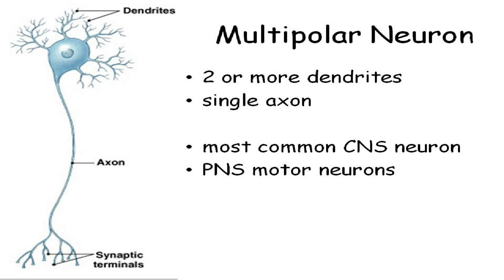In the central nervous system — brain and spinal cord — multipolar neurons are the most common. In your peripheral nervous system, your motor neurons are multipolar neurons. So all of the efferent signals that your body carries are all multipolar neurons. Neurons carrying motor or efferent information are multipolar neurons.